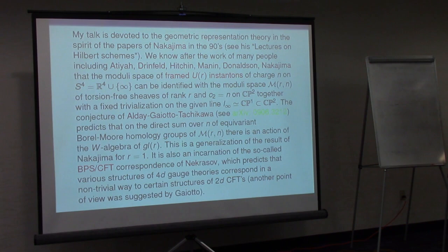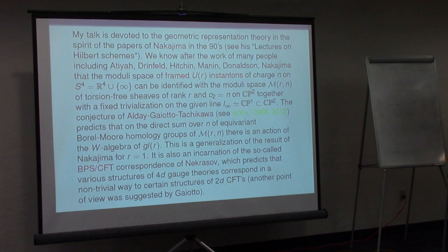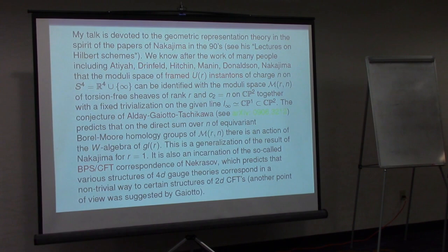This moduli space can be described as a certain Nakajima quiver variety. Much later, the AGT conjecture — after Alday, Gaiotto, and Tachikawa — says that if you take the direct sum of equivariant cohomology of this moduli space, it is acted on by the W-algebra or Virasoro algebra. For R equal to one, it's a result of Nakajima, still in his book or one of his papers from the 90s. So this is a generalization of Nakajima.